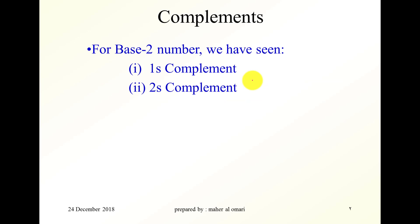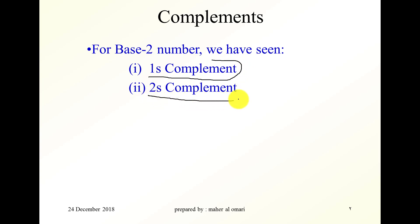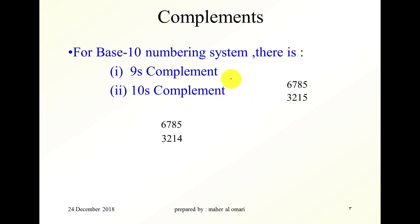If we take a look at the base 2 numbering system, which is the binary system, there is something called the 1's complement, which is the R-1's complement. And of course there is the 2's complement, and we saw that before. In the base 10 numbering system, there is the 10's complement and there is the 9's complement.